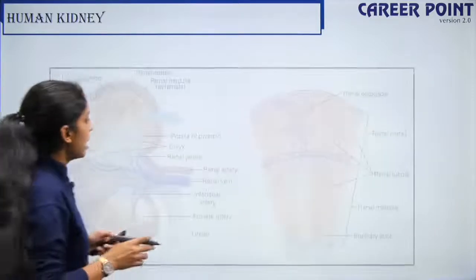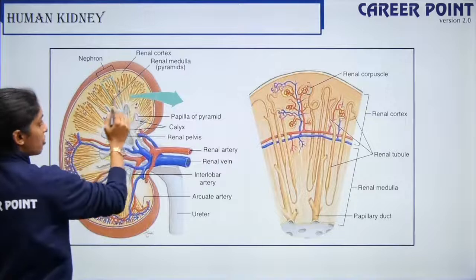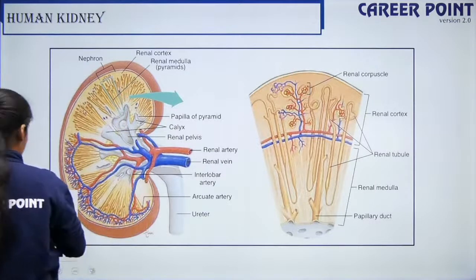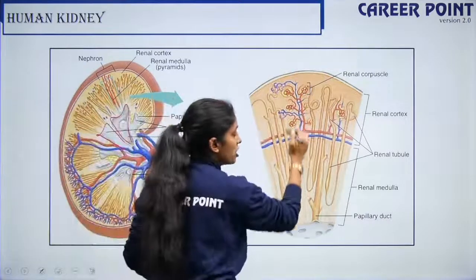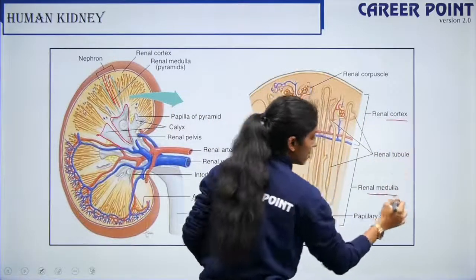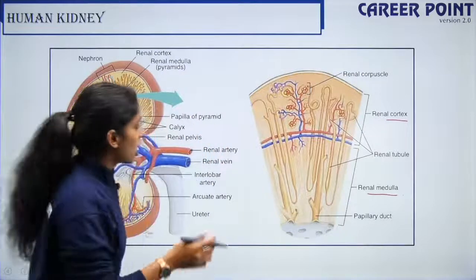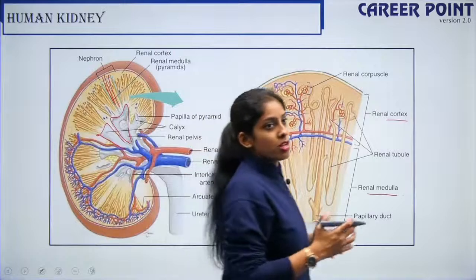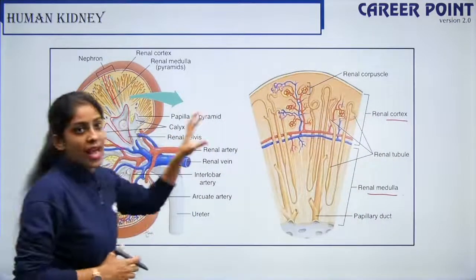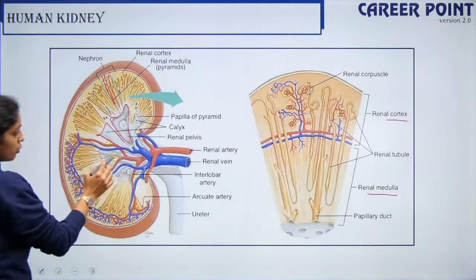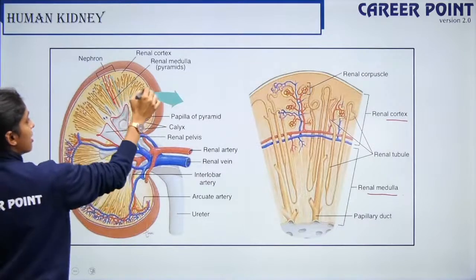This is the kidney structure. We have the renal cortex, the renal medulla, and this funnel-shaped structure is the renal pelvis. These structures are the calyces. The nephron is here — this is the cortex and this is the medulla of the nephron. When the loop of Henley extends into the medulla, we call it a juxtamedullary nephron; if it does not, it is called a cortical nephron. You can also see the column of Bertini, which runs around the medullary pyramid.